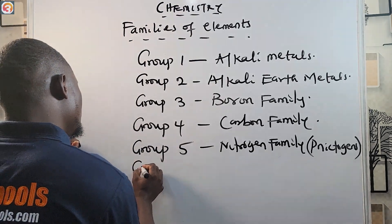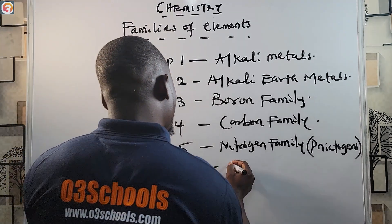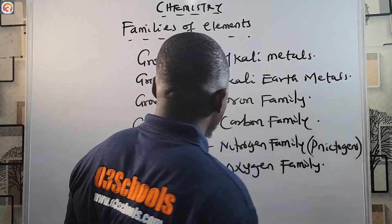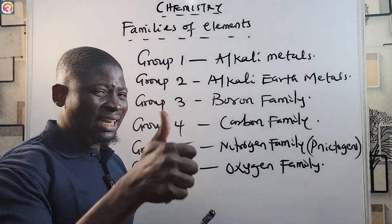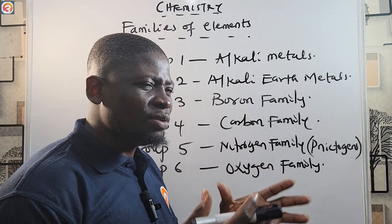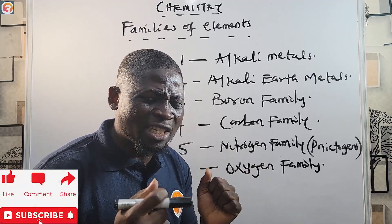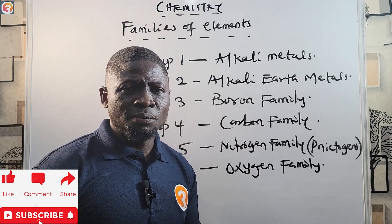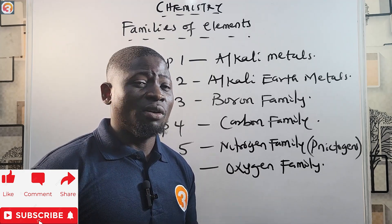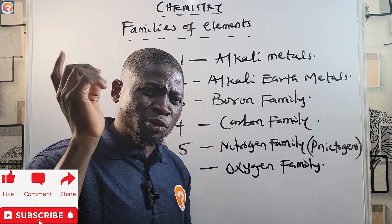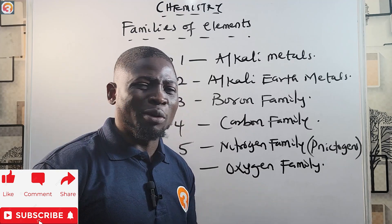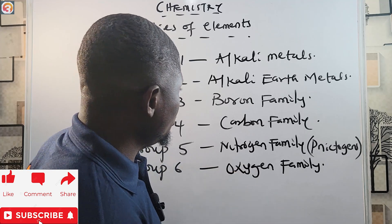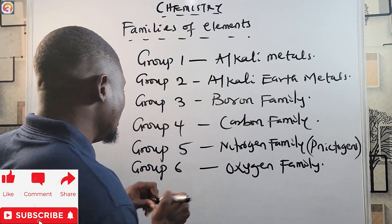Group six elements are called the oxygen family. If you have not liked this video, please click the like button below — liking the video helps students who need these JAMB lessons to easily find the videos. If you have not subscribed, please do so now so you receive notifications when new videos are published.